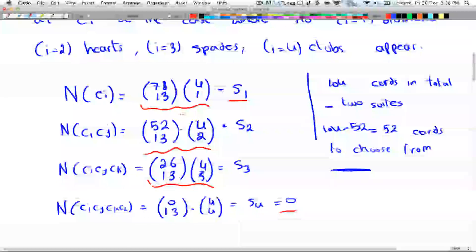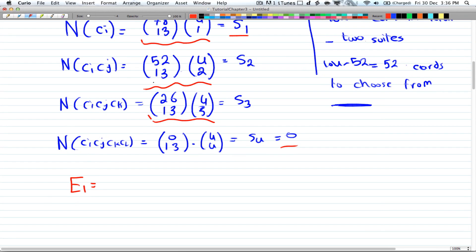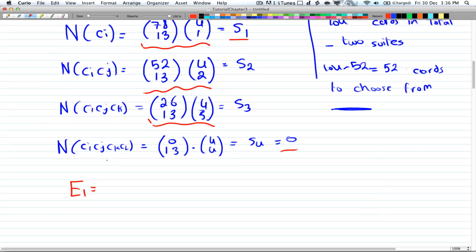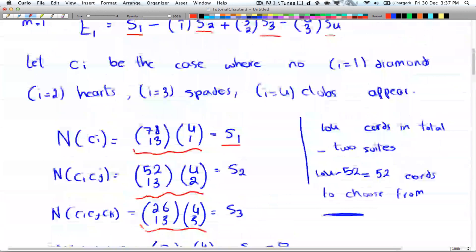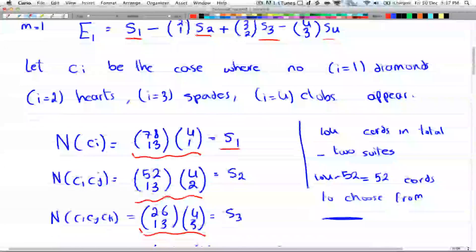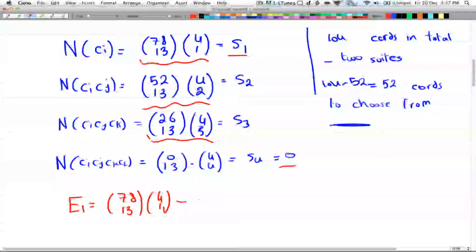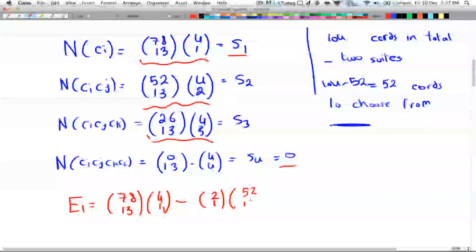Alright, so if you do that you'll get e_1 equals, so s_1 and that will be equal to 78 choose 13 times 4 choose 1. Now we're done with our s_1. Minus 2 choose 1 of s_2, so minus 2 choose 1 times s_2. Here we have 52 choose 13 times 4 choose 2.